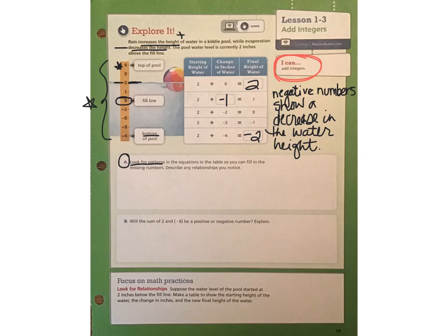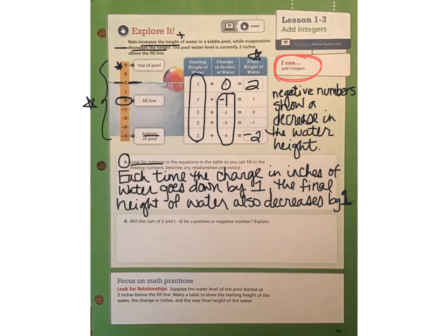So part A of the question tells you to look for patterns in order to fill in the table with those missing numbers, and then describe any relationships that you see. Well, the starting height of the water is the same for the entire table. What's changing is the height of the water. And in this case, other than the first row which has a zero, all of the numbers are negative, which means the water height is decreasing. So the final height of the water, or that last column, is going to show us how much that water is decreasing each time. Essentially what's happening in the table is that each time we change the inches of water by one. So it's going down an inch, and then it goes down two inches, and then it goes down three inches, and then it goes down four inches. So each time we go down another inch on the table, we also lose an inch on that final height of the water.